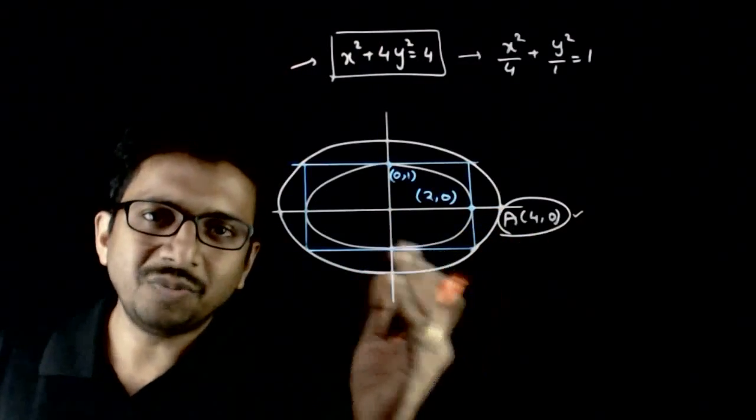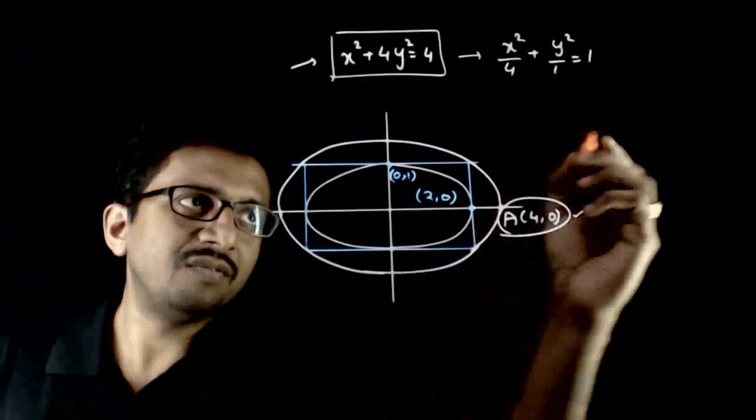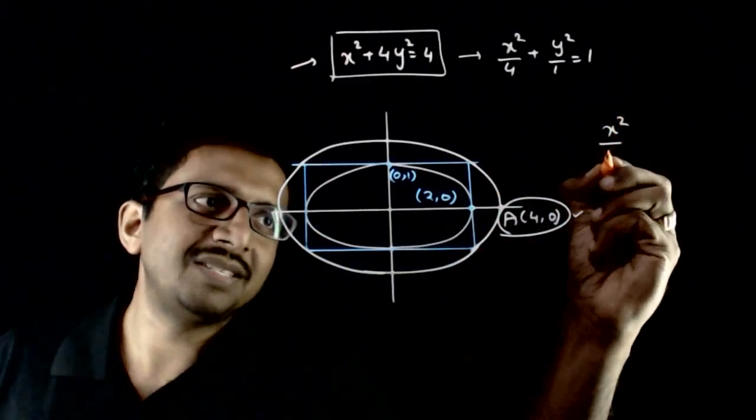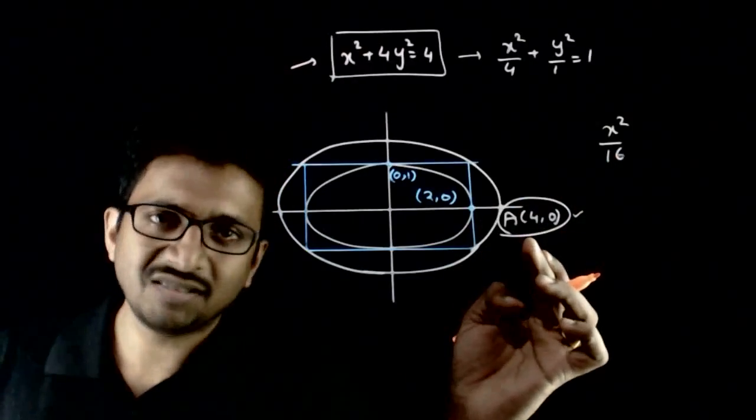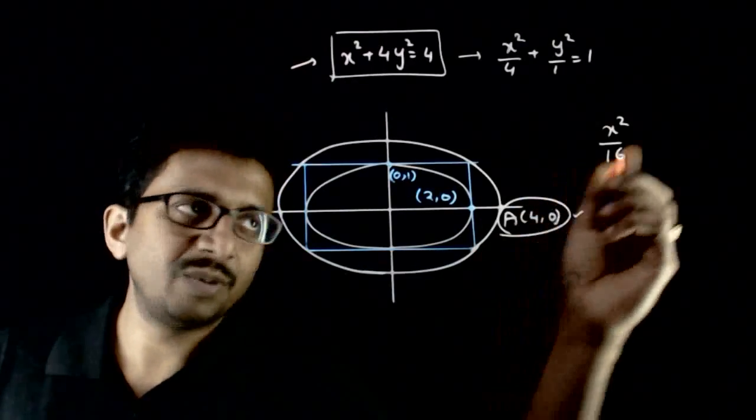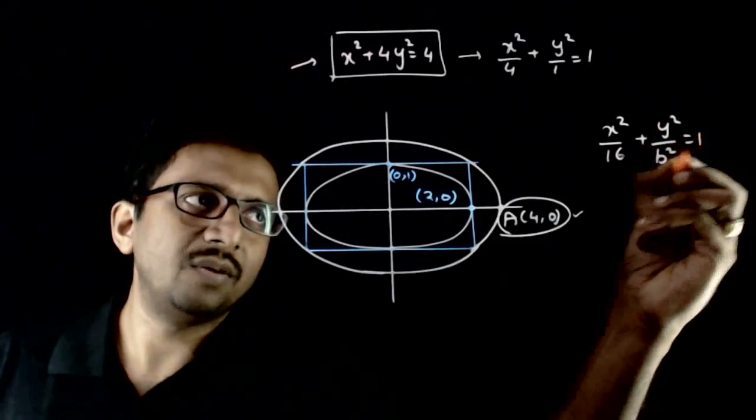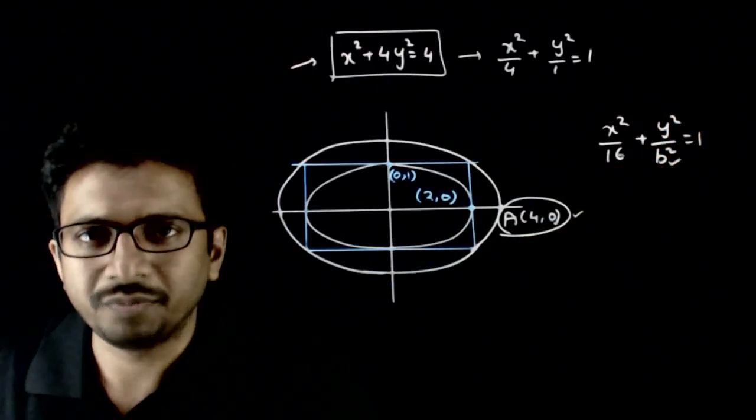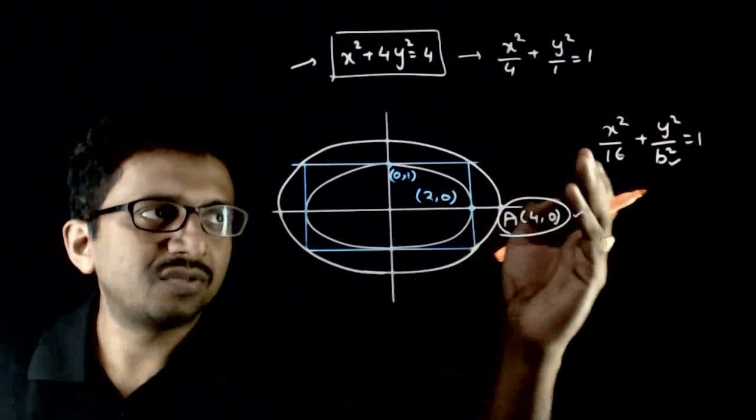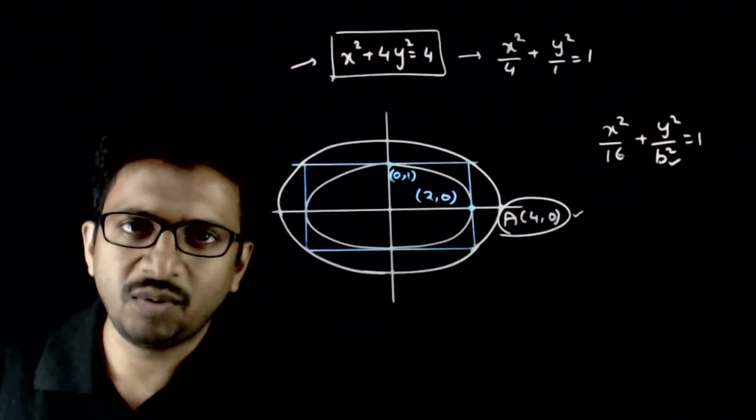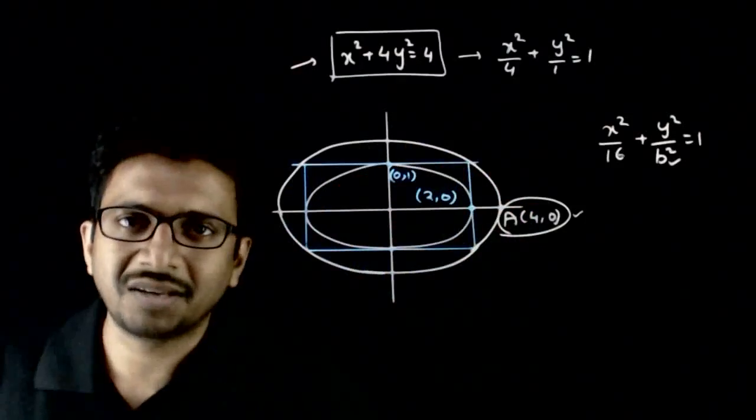So can I assume that this ellipse, the outermost ellipse, will be of the form x²/16, because a = 4. So it will be of the form x²/16 + y²/b² = 1. This is one thing which I do not know right now. x²/16 + y²/b² = 1. So this is how the equation of this ellipse looks like.